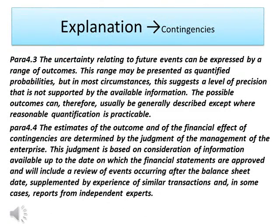Para 4.3: The uncertainty relating to future events can be expressed by a range of outcomes. This range may be presented as quantified probabilities, but in most circumstances this suggests a level of precision that is not supported by the available information. The possible outcomes can therefore usually be generally described, except where reasonable quantification is practicable. Para 4.4: The estimates of the outcome and of the financial effect of contingencies are determined by the judgment of the management of the enterprise. This judgment is based on consideration of information available up to the date on which the financial statements are approved and will include a review of events occurring after the balance sheet date, supplemented by experience of similar transactions and, in some cases, reports from independent experts.